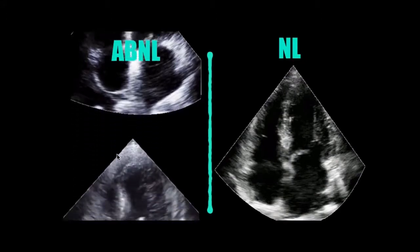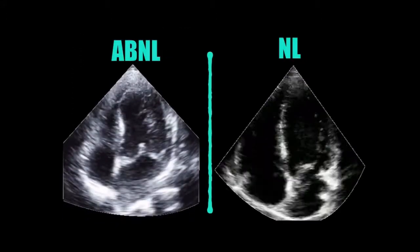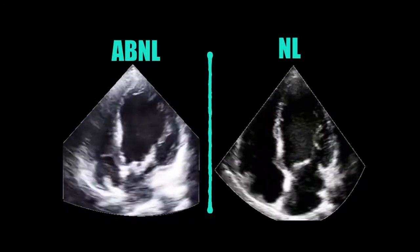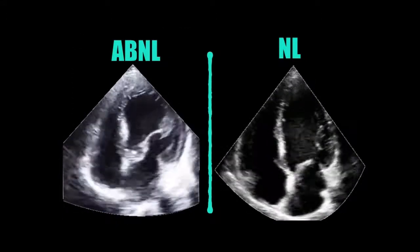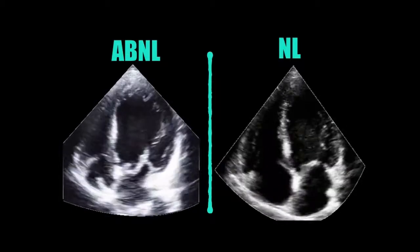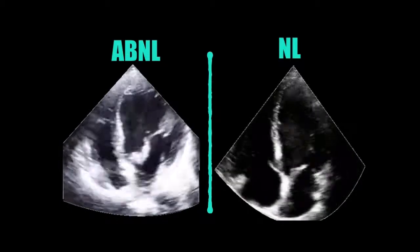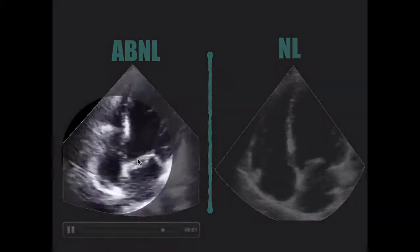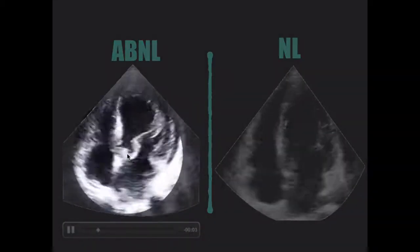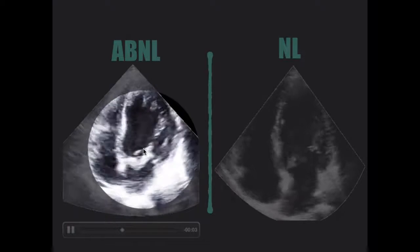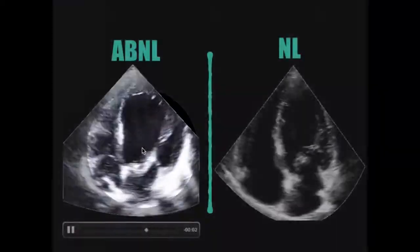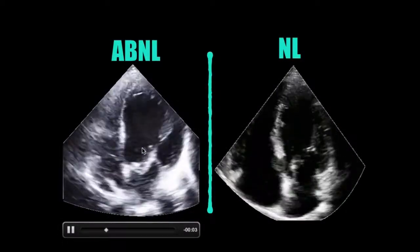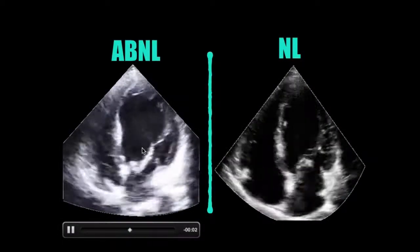Keeping on that same view, this is what mitral valve endocarditis looks like. It's a little trickier to see, but you can see there's a little kind of flappy thing right about there — that is mitral endocarditis. And on the right side of the screen, you have what normal looks like.